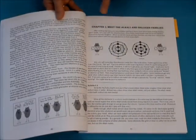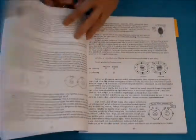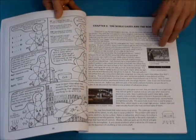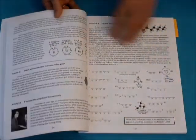And then we start meeting each family group. Here we meet the alkalis and halogen families. And so the rest of the booklet is basically meeting the noble gases, the non-metals, and learning a little bit about the elements in those groups.